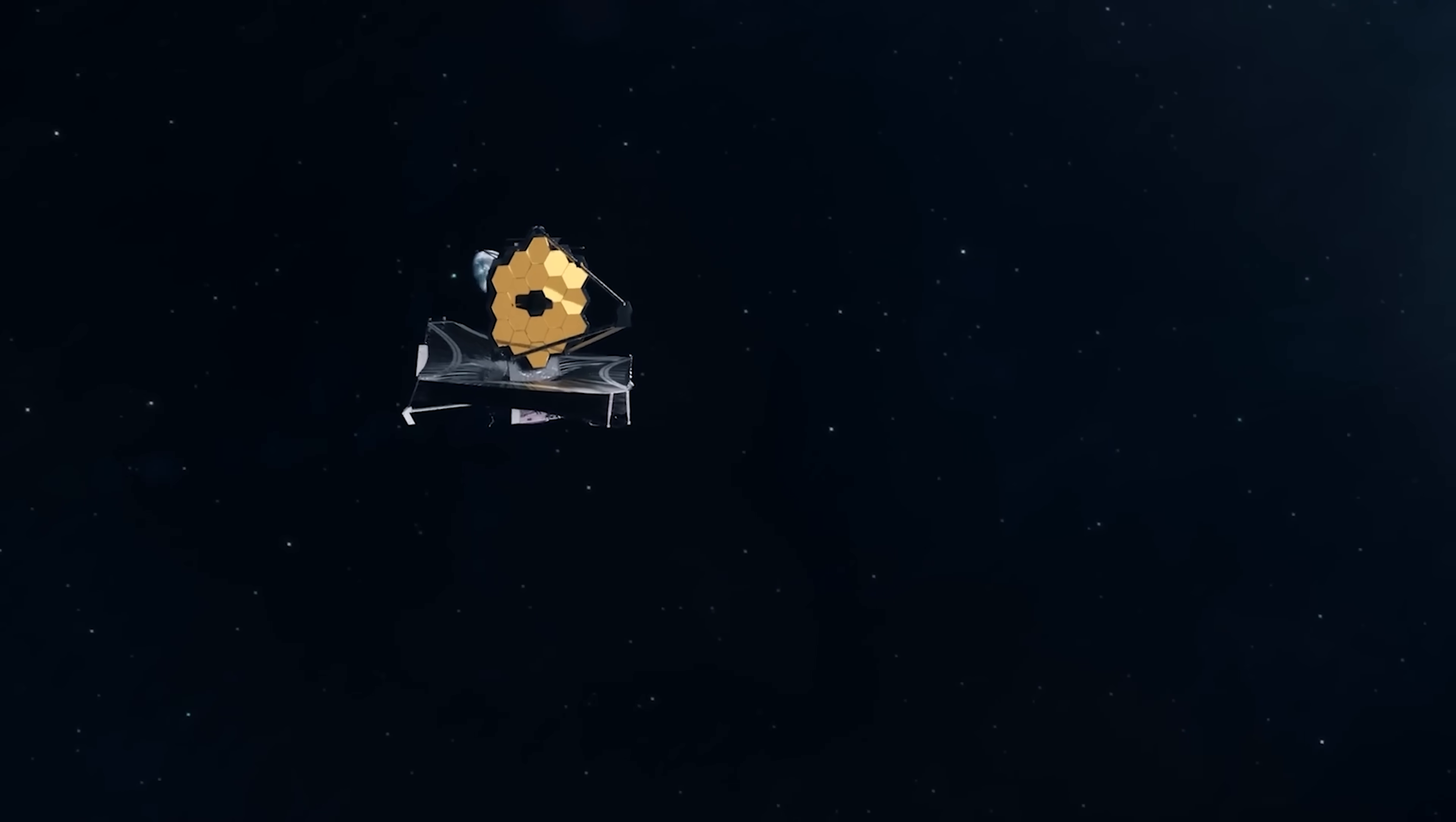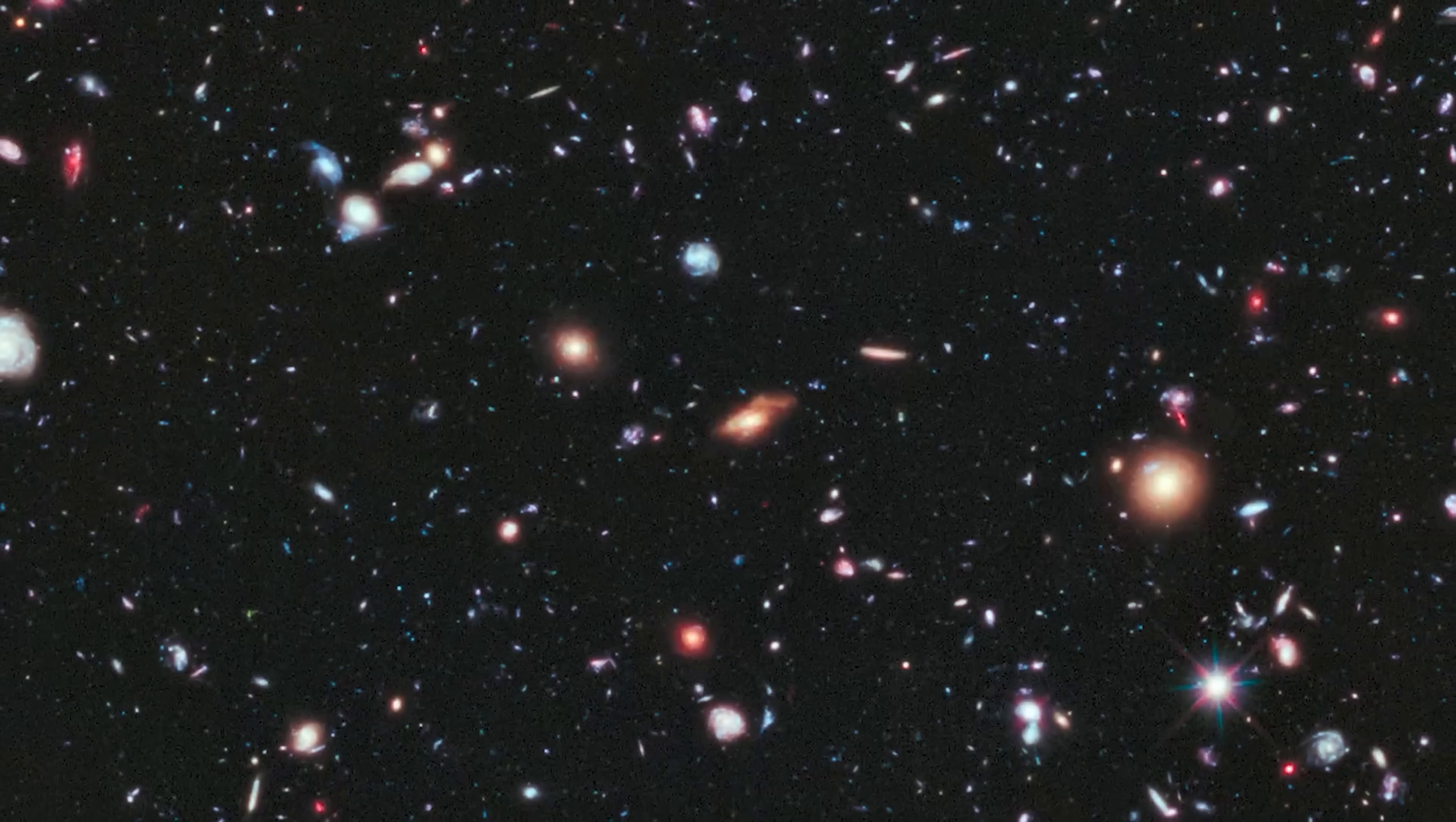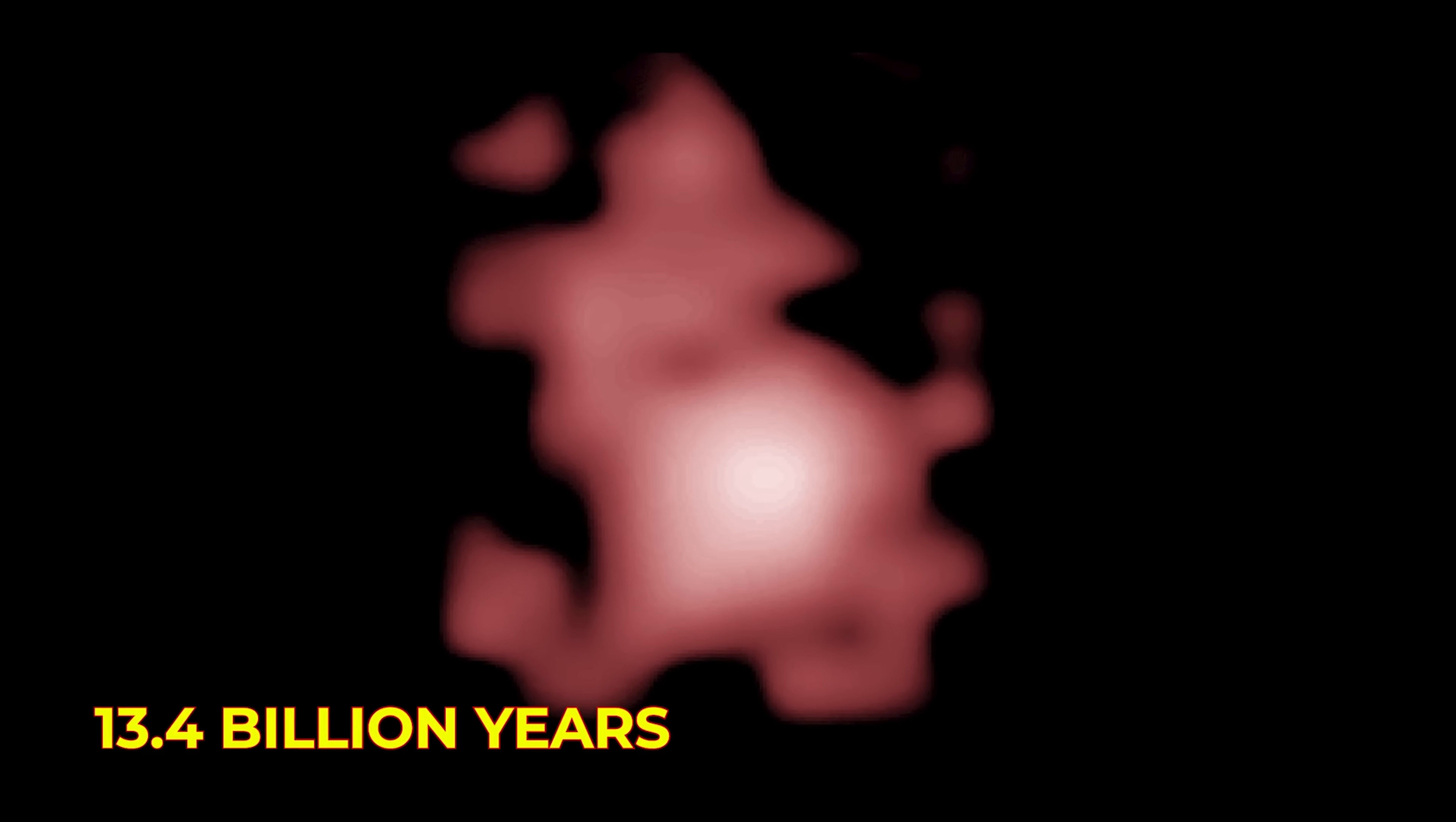The Webb telescope, with observational capabilities extending approximately 13.5 billion years into the past, doesn't dramatically outperform its predecessor, the Hubble Space Telescope. However, it offers enhanced clarity and detail in observations. The oldest galaxy identified by Hubble, known as GNZ 11, dated to around 13.4 billion years ago.